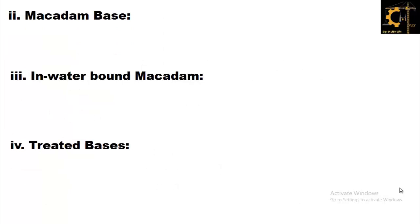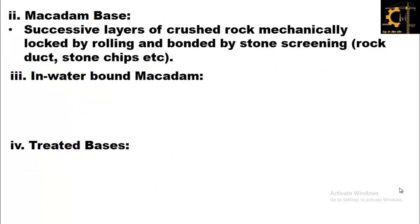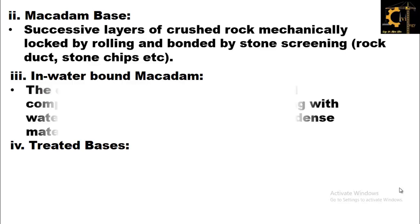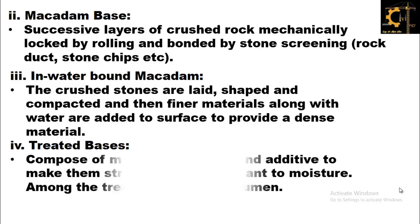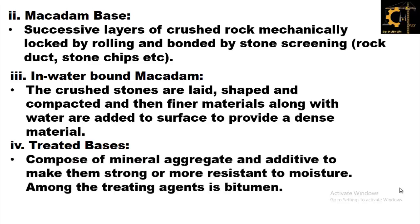The second type of base course is macadam base — successive layers of crushed rock mechanically locked by rolling and bonded by stone screenings, such as rock dust or stone chips. The third type is water-bound macadam, where crushed stones are layered, shaped, and compacted, and then finer materials along with water are added to the surface to provide a dense material. The fourth type is treated bases, composed of mineral aggregate and an additive to make them stronger or more resistant to moisture, with bitumen being one of the treating agents.